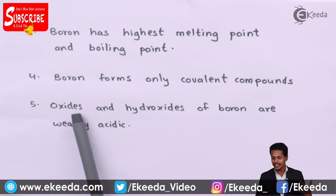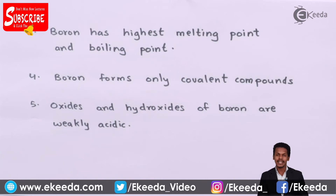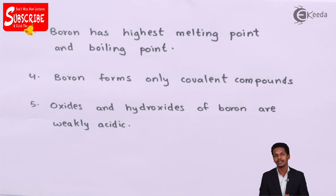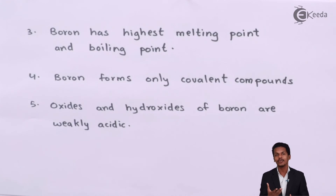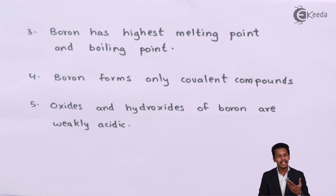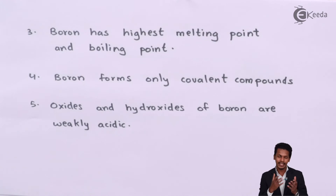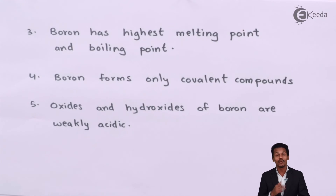The fifth point is that the oxides and hydroxides of boron are weakly acidic. Boron oxide is acidic in nature, though only weakly so. In contrast, aluminum oxide (Al₂O₃) is amphoteric in nature, while thallium oxide is weakly basic. The acidic-to-basic trend in the oxides changes as we go down group 13.